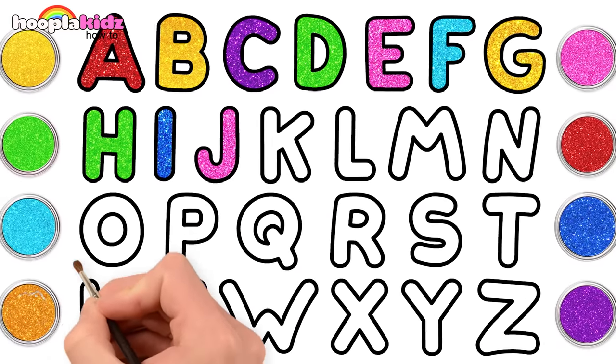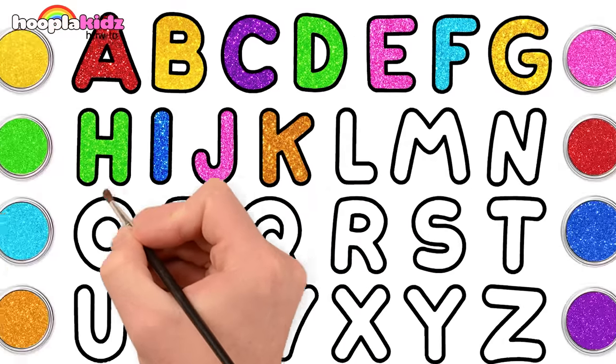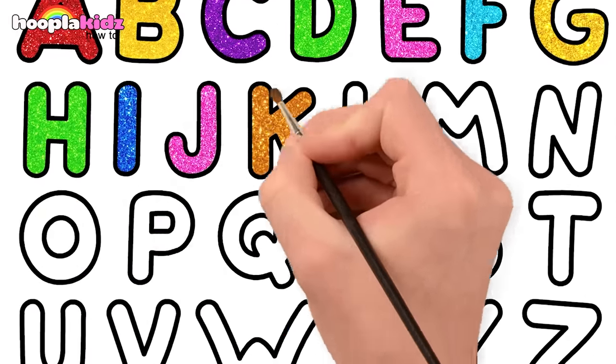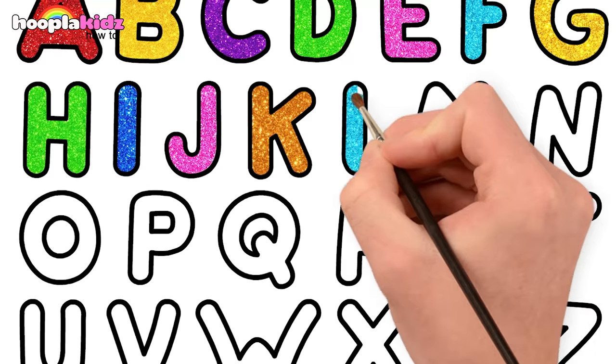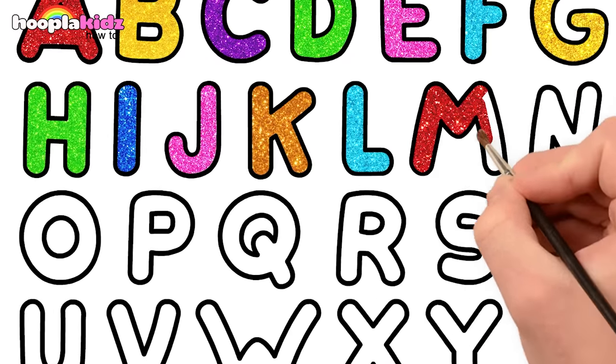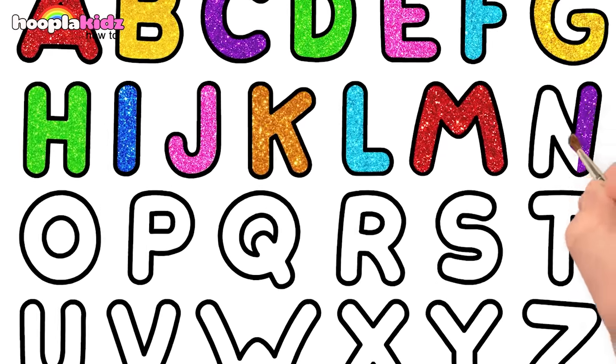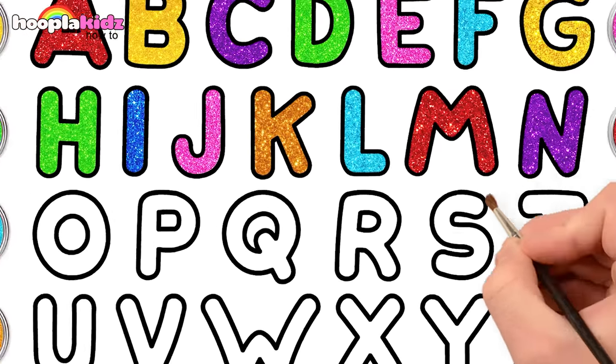Next we're going for K. Gold koala. What shall we do for the letter L? Blue. What a great choice. It could be a blue lizard. M can be red for a red monkey. Well, why not? It's my monkey and I want it to be red. Purple for N because it's such a nice colour.